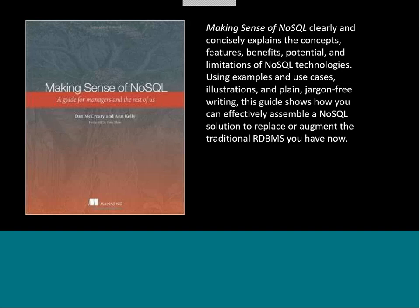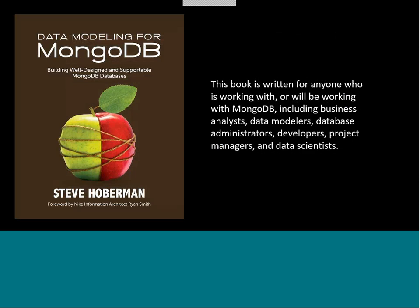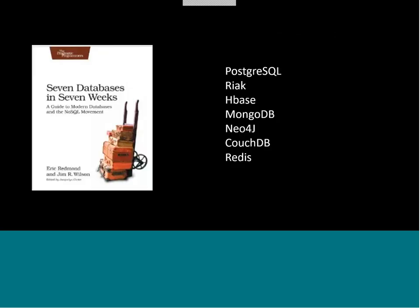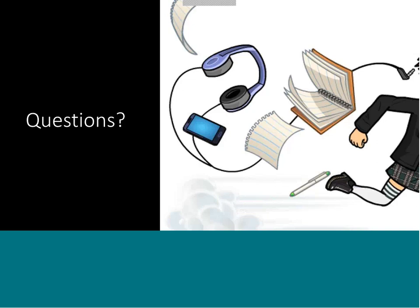Some quick resources: Dan and Ann have a great book for making sense of these things. There's also a free graph database eBook you can download from O'Reilly, written by the people at Neo4j — it's a great foundation on graph databases and graph processing. Steve Hoberman has his book on data modeling for MongoDB, which is the document database. And then there's a great book that introduces you to seven types of database products, which are really an exposure to all of these NoSQL types. So I'm just about on time — I'd like to know if you have questions.